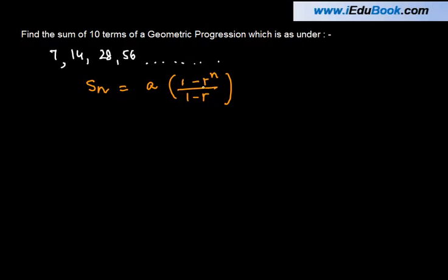Now, here basically if we see, you are supposed to find out the sum of how many terms? 10 terms. So, n is equal to 10. The first term, a, is equal to 7.